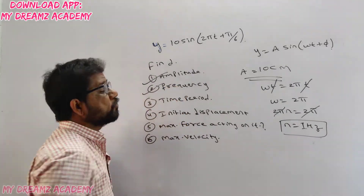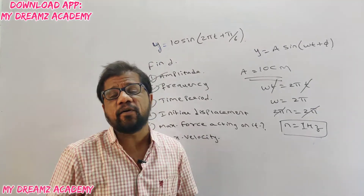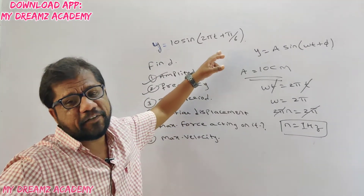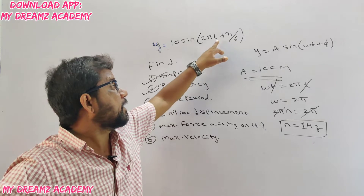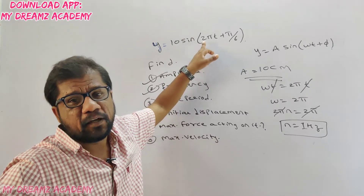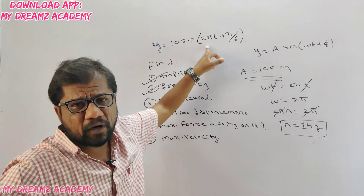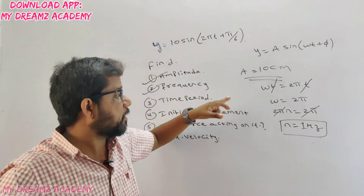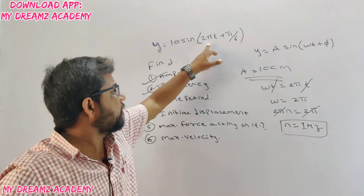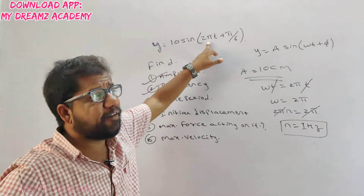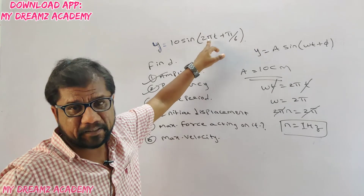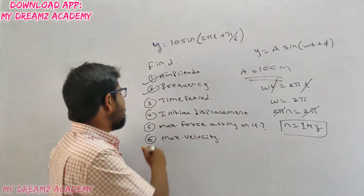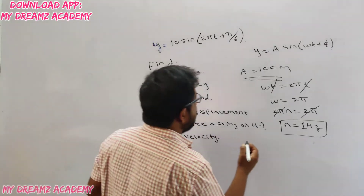The term ω is called angular velocity or angular frequency. If the examiner directly asks for angular frequency or angular velocity, the answer is ω = 2π. Third question: now find time period.